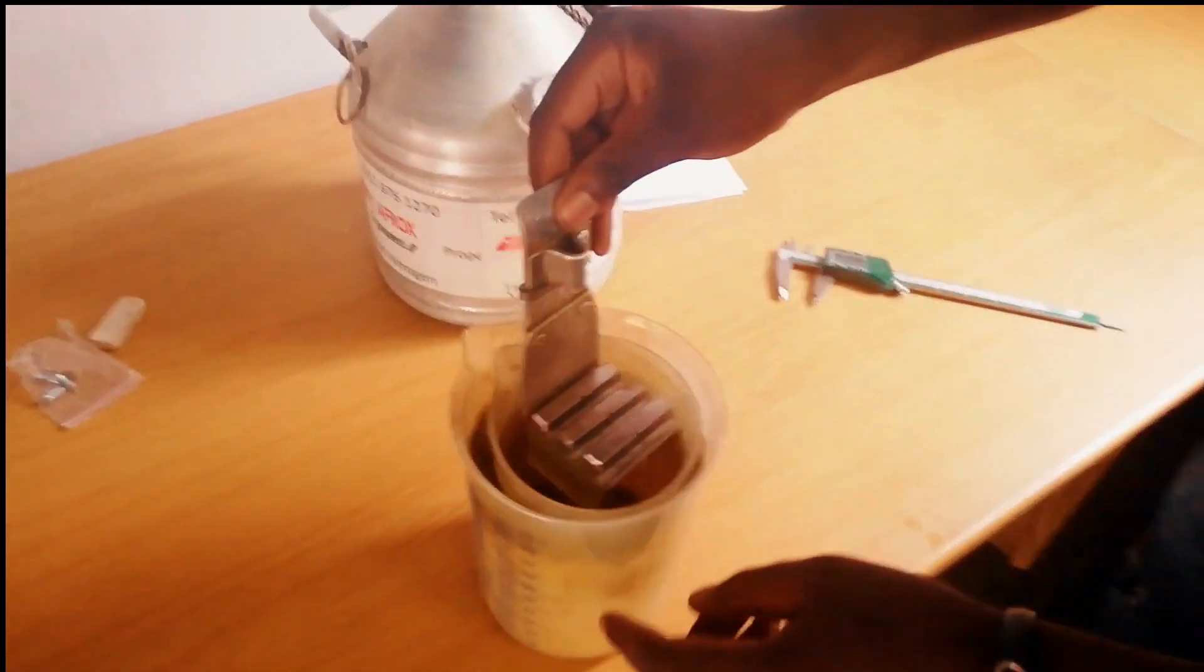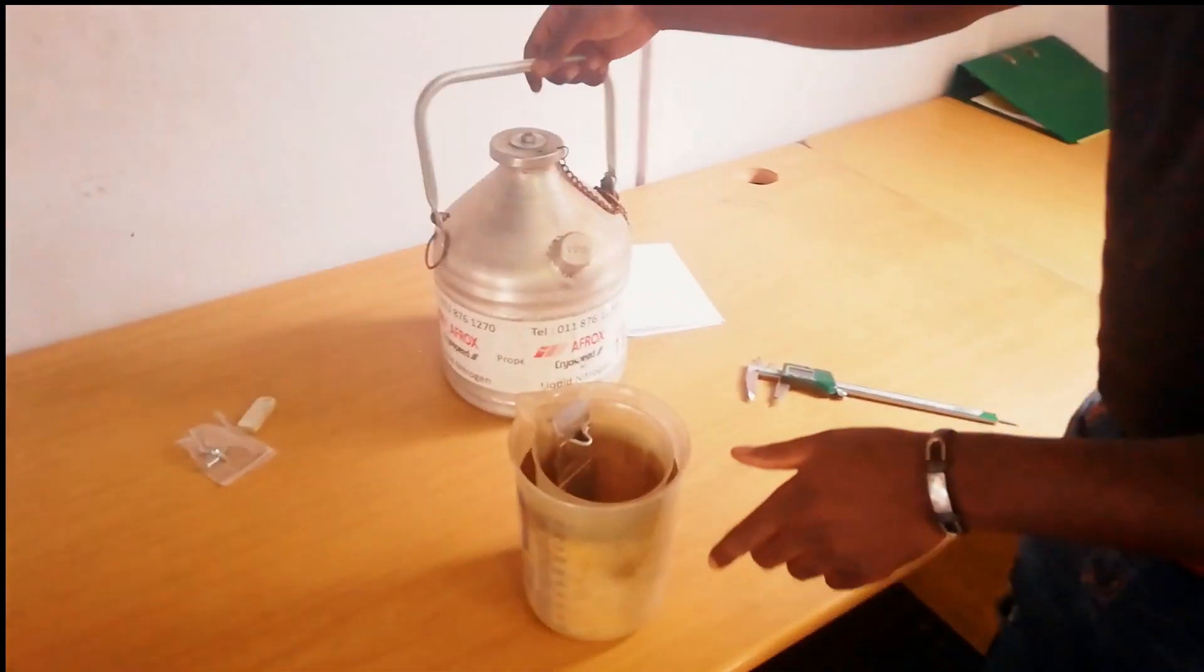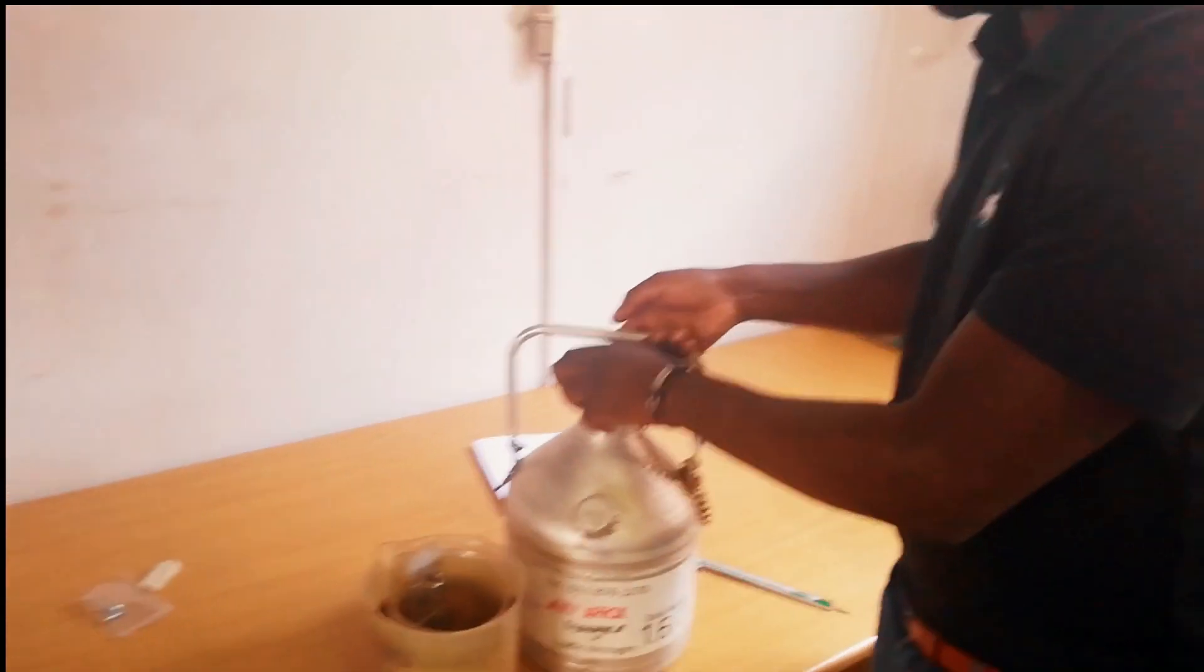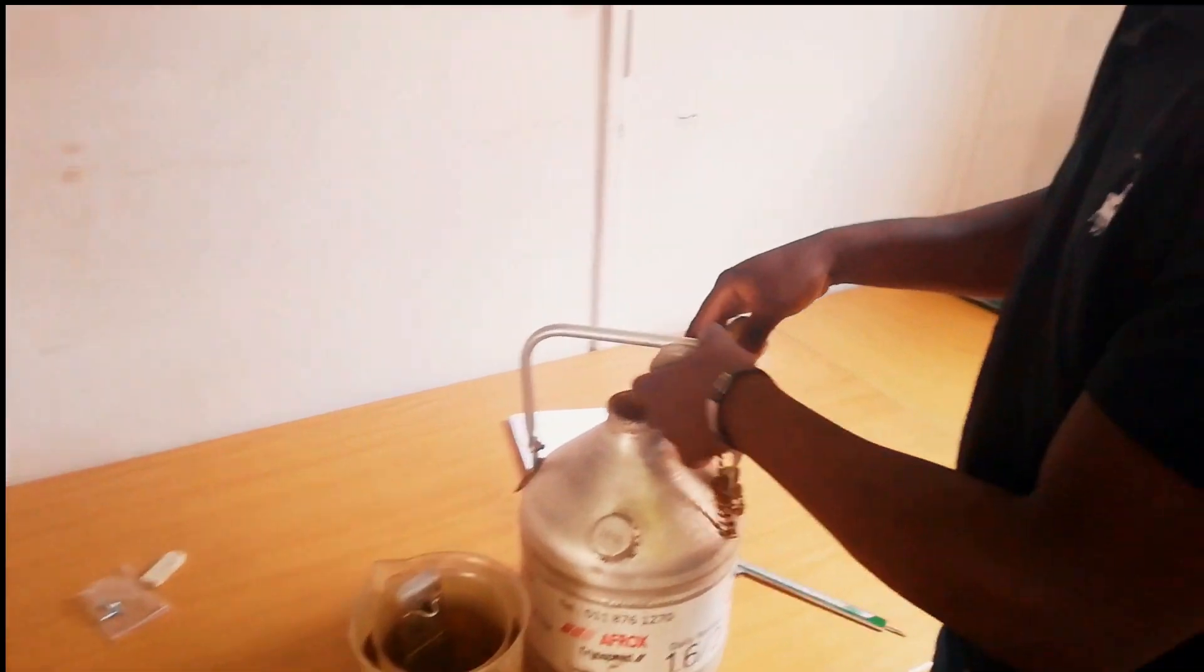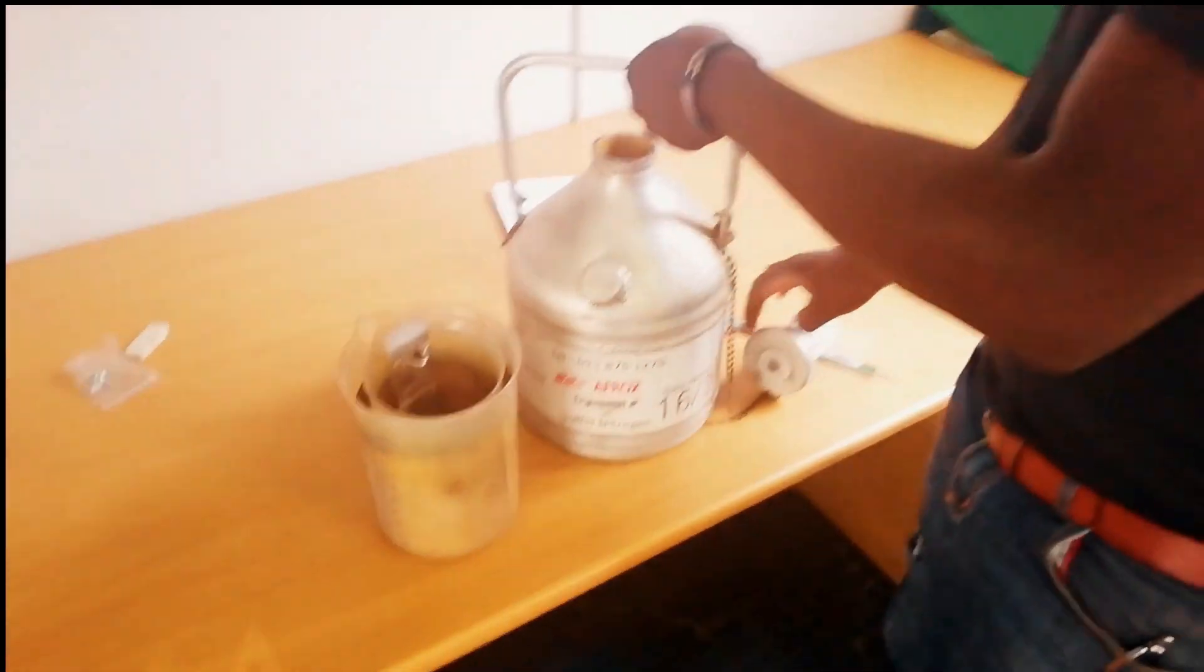So we all know that for impact testing, we have, in other words, one degree Celsius tolerance. Which means you can go from minus 195 up to minus 197.